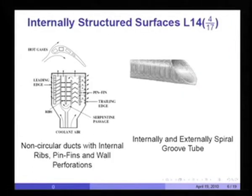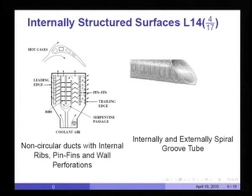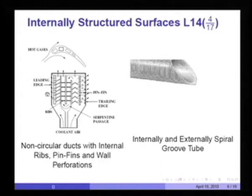Internally structured surfaces — the gas turbine blade is a classic example. Notice that this is the cross section of the blade, with ducts of non-circular cross section. Each duct has ribs in it, sometimes straight, sometimes at an angle. Some ducts are straight whereas others have a bend. In some ducts, one wall is perforated so that flow goes through and also impinges as air on the leading edge of the blade, with remainder air exiting the top.